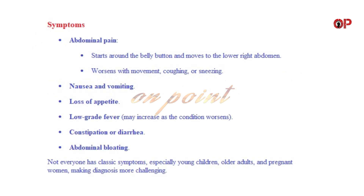Symptoms. Abdominal pain starts around the belly button and moves to the lower right abdomen. It worsens with movement, coughing, or sneezing. Other symptoms include nausea and vomiting, loss of appetite, and a low-grade fever that may increase as the condition worsens.